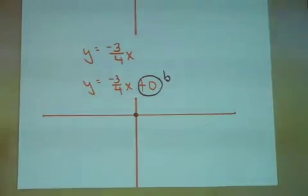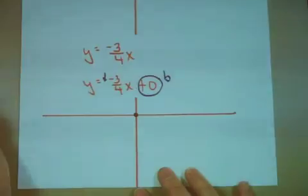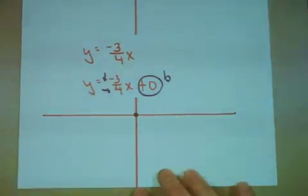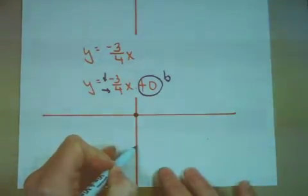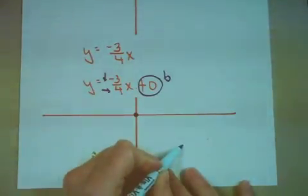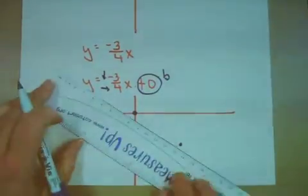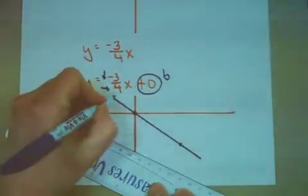Now what should I do? The negative 3 says to go down, the positive 4 says to go to the right. So from the existing point, I'm going to go down 1, 2, 3, and right 1, 2, 3, 4. Take my straight edge and create a nice clean line.